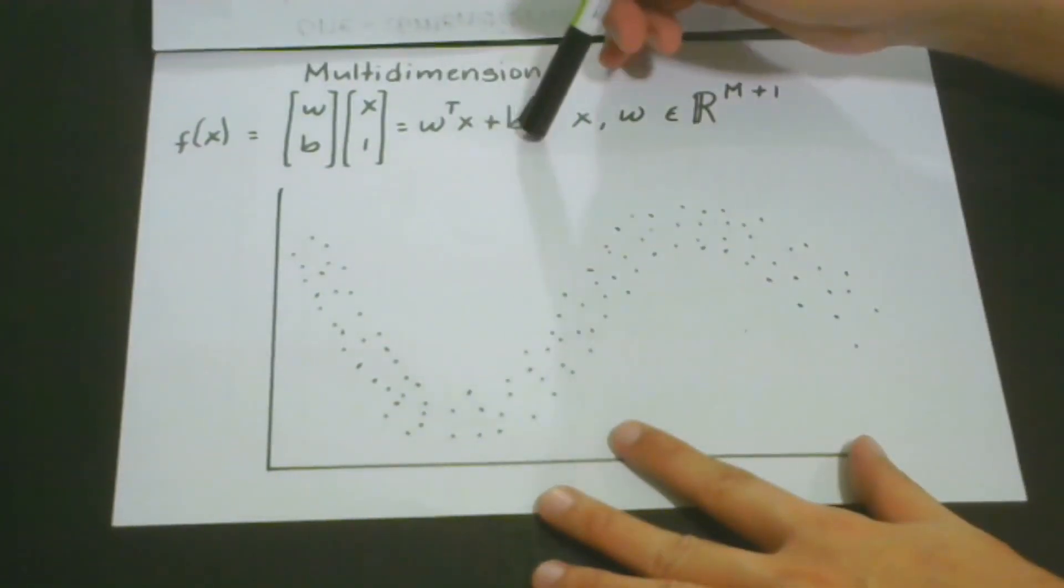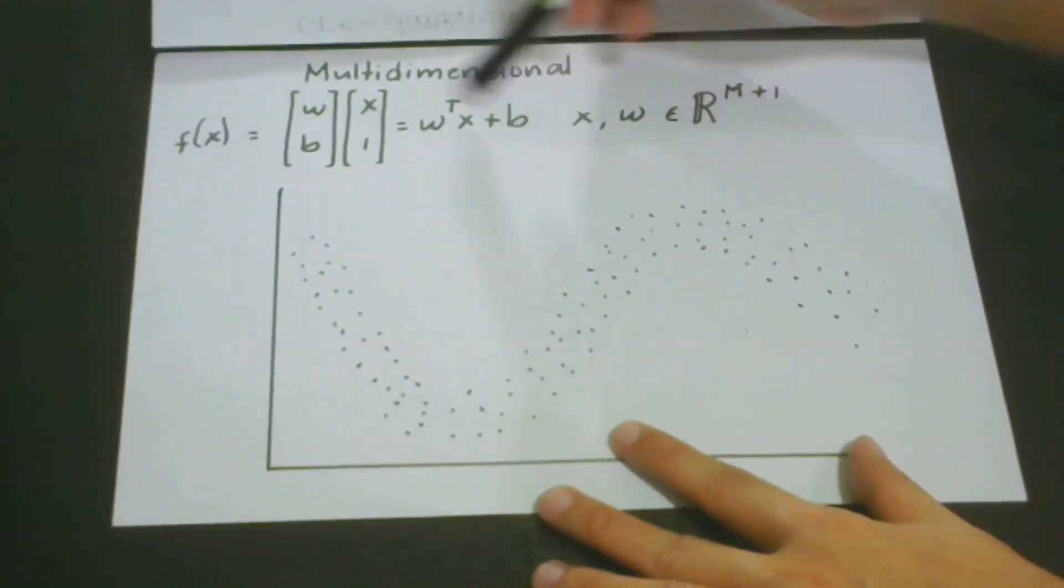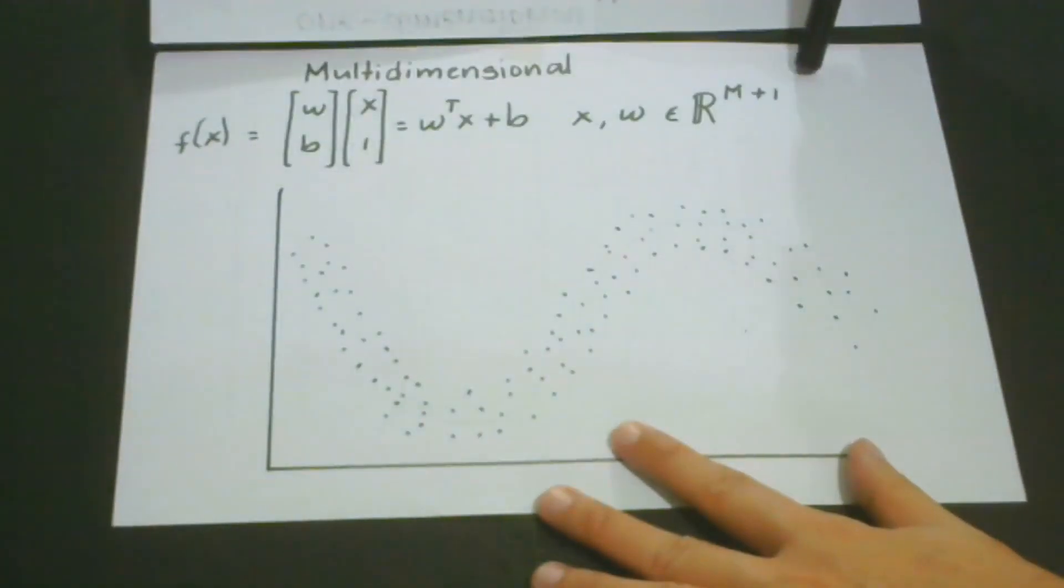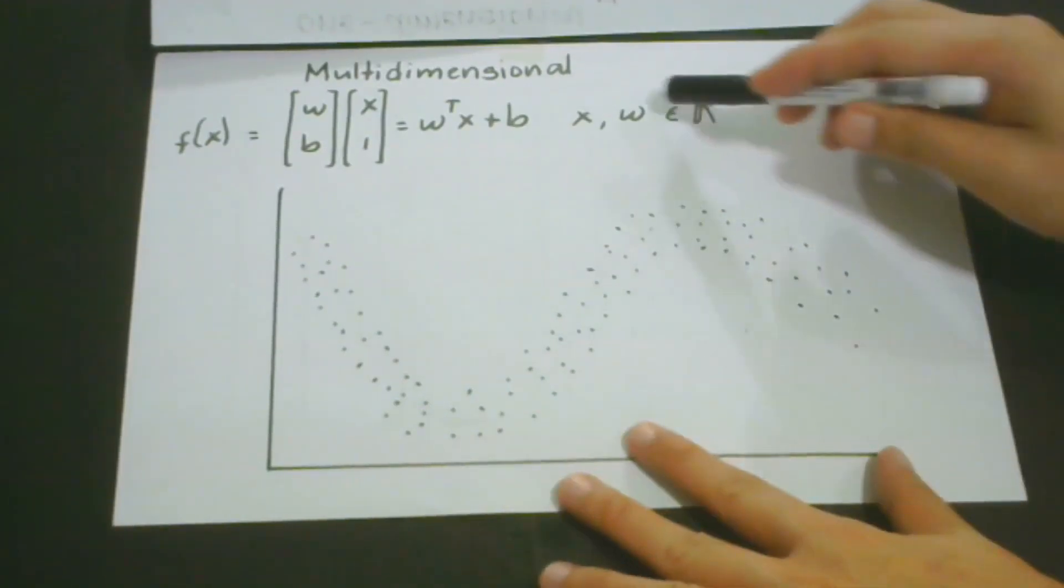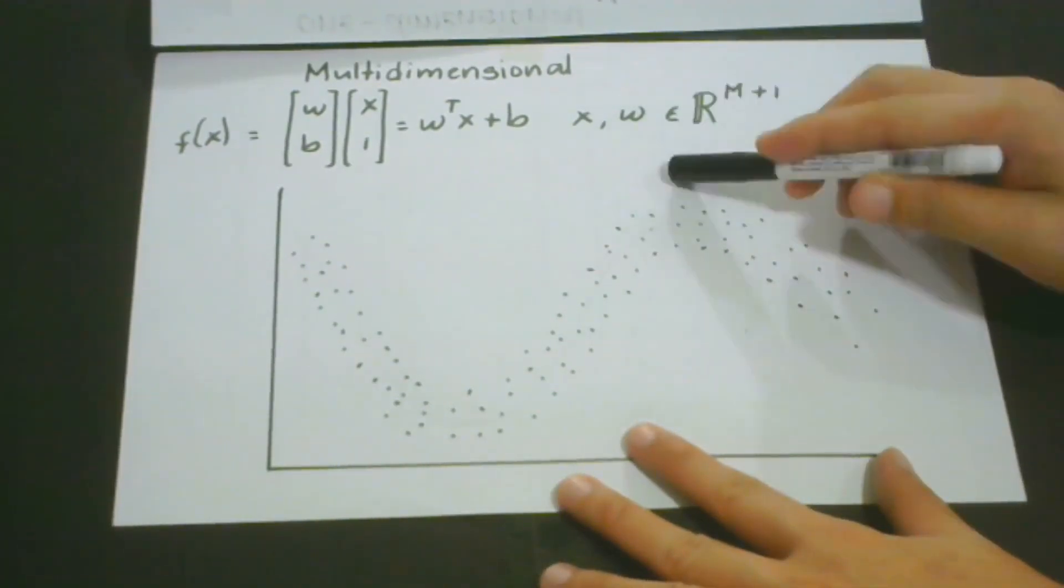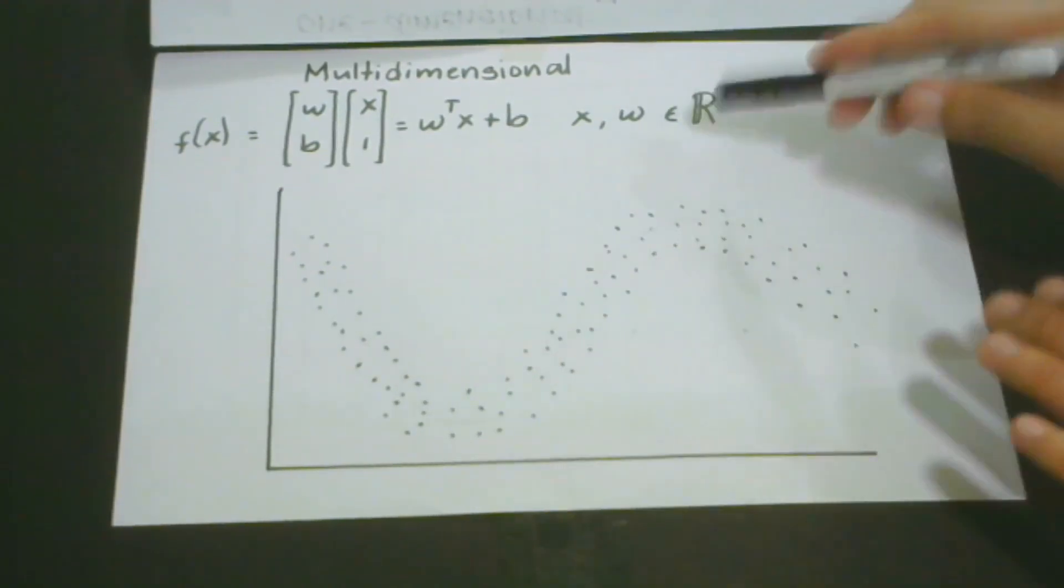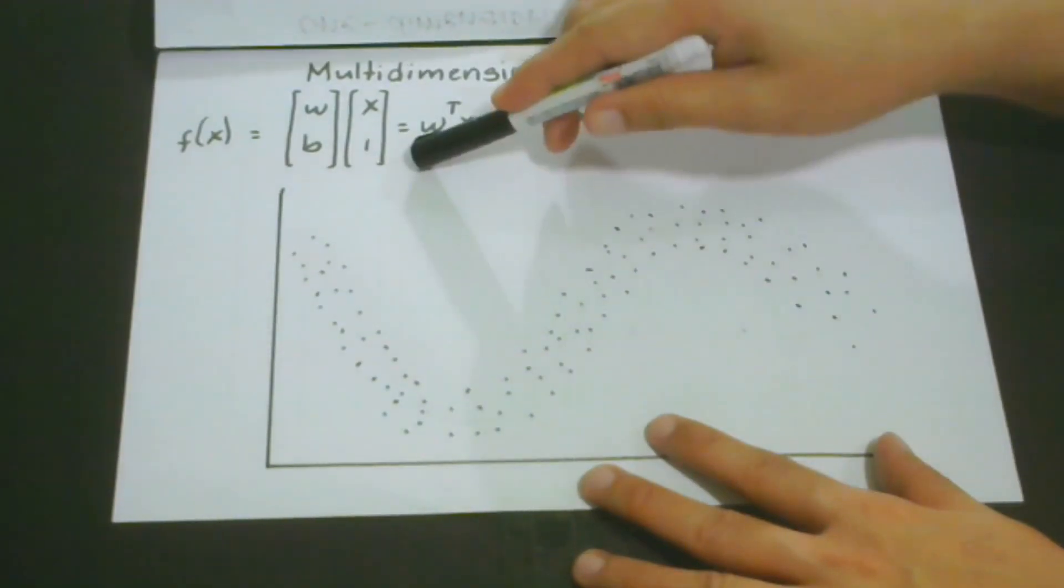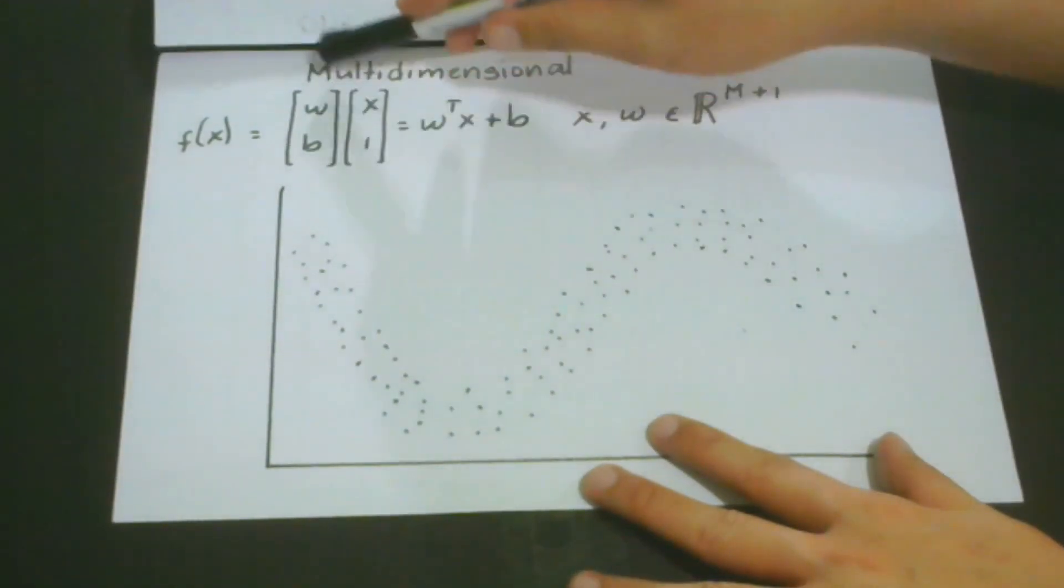This mathematical presentation gives us the perspective of multidimensional support vector regression problem. This is how we formulate a problem when we have a lot of features to consider. As you can see here, we augment x by 1, and we include b in the matrix of W.